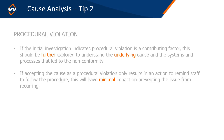Tip two: procedural violation. If the initial investigation indicates a procedural violation is a contributing factor, you need to further explore this and understand the underlying causes. Accepting the cause as simply a procedural violation and only reminding staff to follow the procedure will have minimal impact. You have to work out why — what resulted in the failure to follow the procedure.